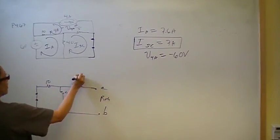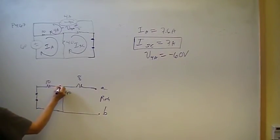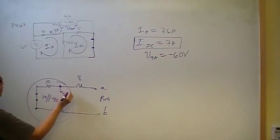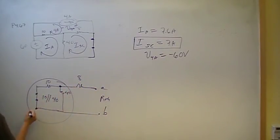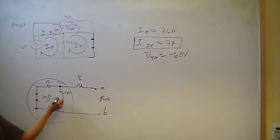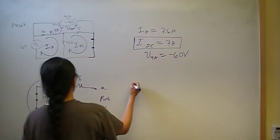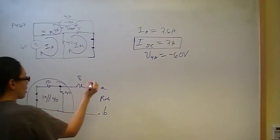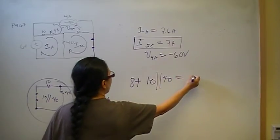It can sometimes be hard to see the relationships, but in this case it's easier to see. There's a connection here and a connection here, so we have 10 in parallel with 40. Once reduced to a single resistance, that's 8 in series with the parallel combination of 10 and 40. This series connection gives us 8 plus (10 parallel 40), which reduces to 16 ohms.